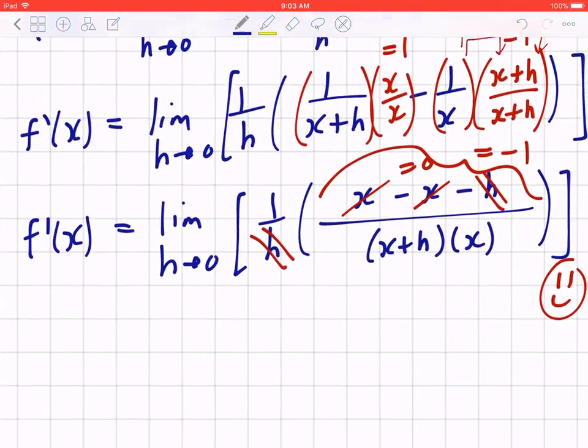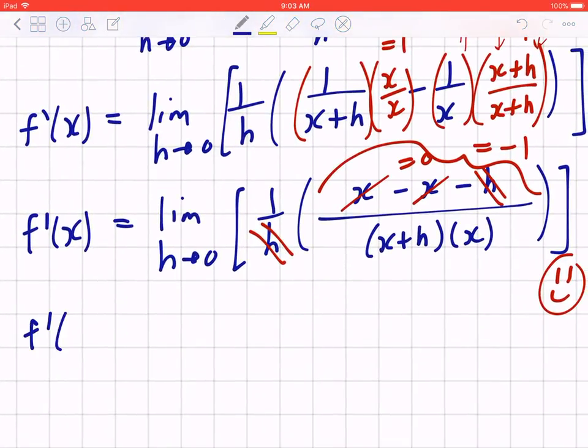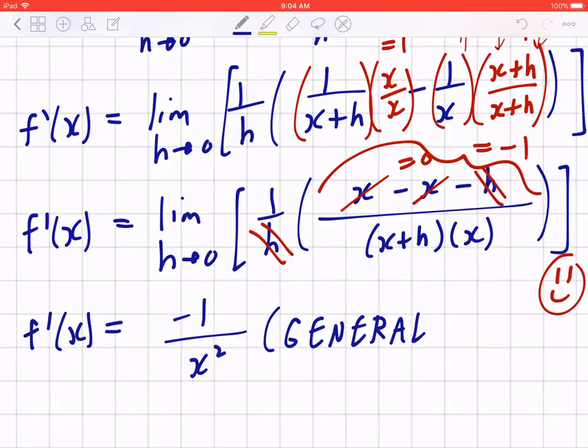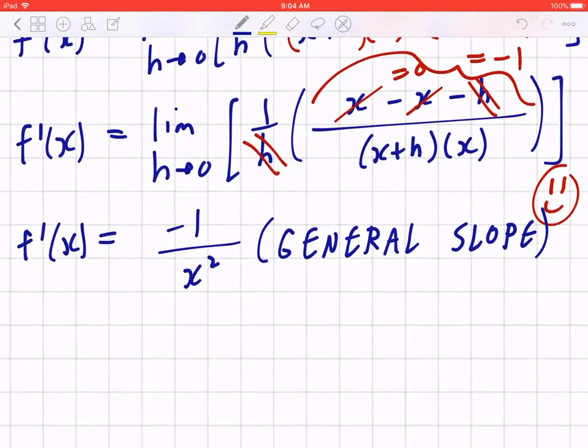So you go back to the basic concept of limits, step 1, you plug in h to be 0, that's going to be negative 1 divided by x times x, which is x squared. So again, this is the general slope, not the specific slope. Once you know negative 1 over x squared is the general slope, now you go back and you write down for x equal to a, m, which is the specific slope now, is going to be negative 1 over a squared.